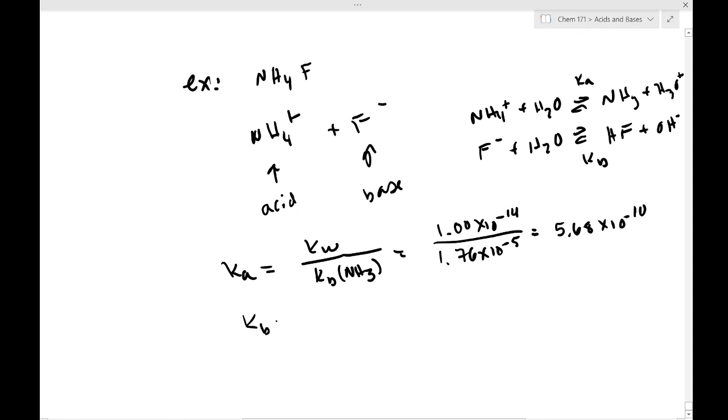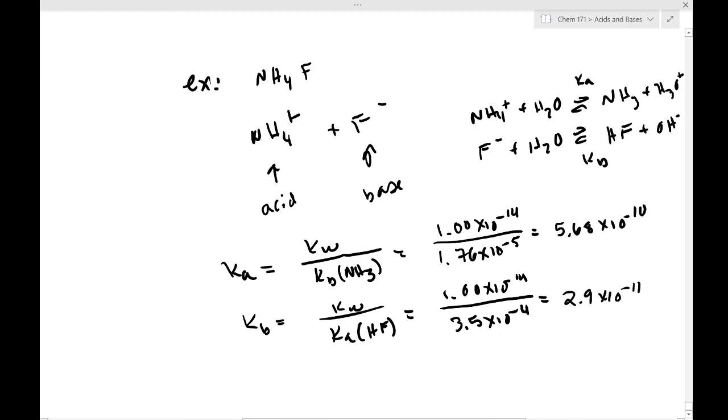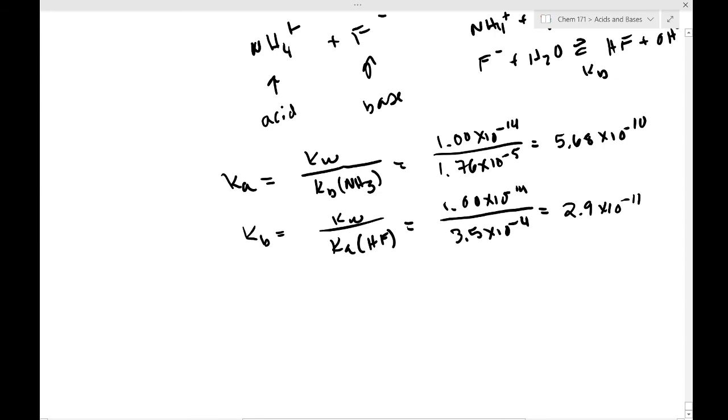Okay, then we have Kb. Kb is equal to Kw over Ka of HF, and in this case we have 1.00 times 10 to the minus 14 divided by 3.5 times 10 to the minus 4, and that equals 2.9 times 10 to the minus 11. Now we can compare the two. We see that the Ka is bigger than the Kb by more than a factor of 10, so it's more than 10 times larger. So therefore Ka is greater than Kb, which means that this solution of ammonium fluoride would be an acidic solution. Okay, the Ka wins out, we end up with an acidic solution.